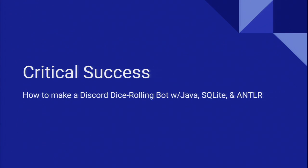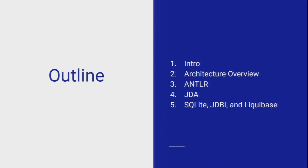Today I'm going to do a talk about how to make a Discord dice rolling bot. It's going to be mostly a how-to and a little bit about the dice rolling bot I made and the choices I made along the way. I'll give a bit of an intro, do a quick demo, then an overview of all the components, and then we'll start diving deeper into the three main parts. The one we'll spend the most time on is ANTLR, because this dice bot has to do parsing of some pretty complex expressions.